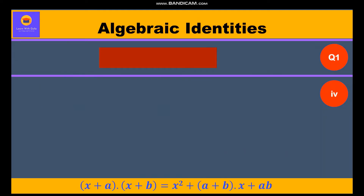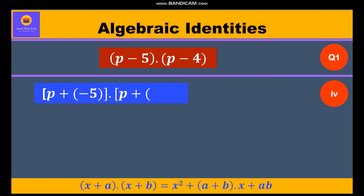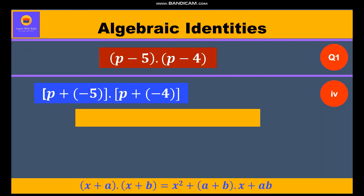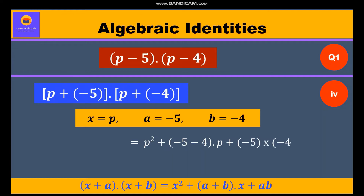Now for the fourth part: (p - 5) into (p - 4). Taking the minus sign inside the bracket gives p + (-5) into p + (-4). Here x is equal to p, a is equal to -5, b is equal to -4. Substituting into Identity 5: p² + (-5 + (-4))p + (-5 × -4), which equals p² - 9p + 20.